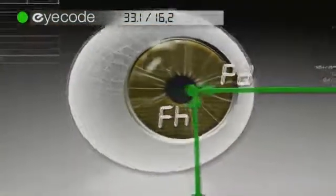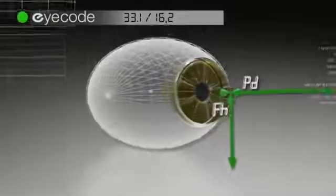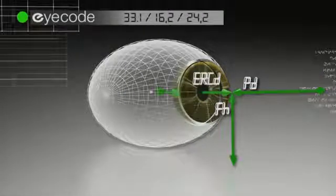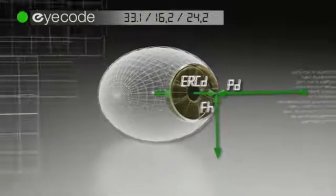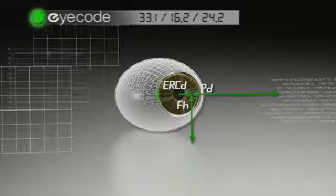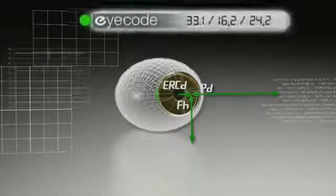The ERC is the new reference for pupillary distance and fitting height measurements. And what was an approximate vertex distance is now replaced by the distance between the eye rotation center and the lens, called the ERC distance, or ERCD.